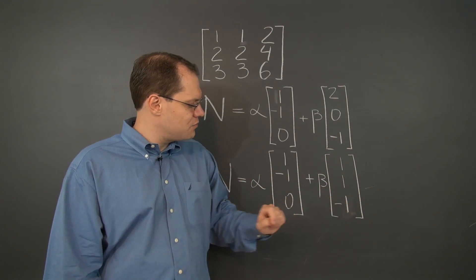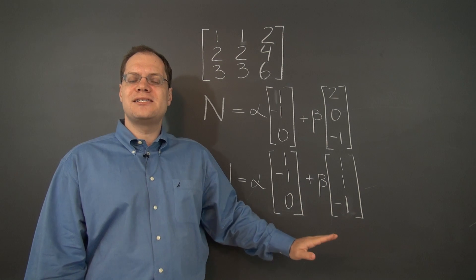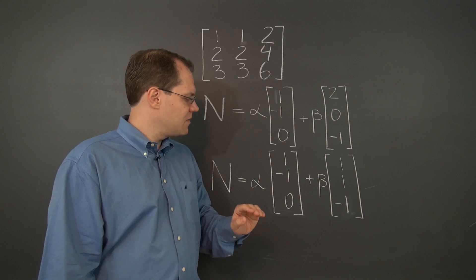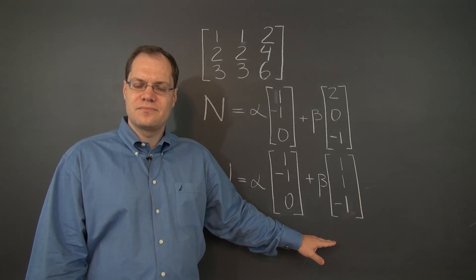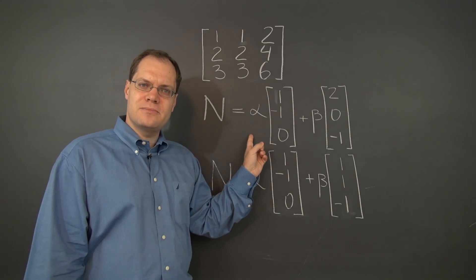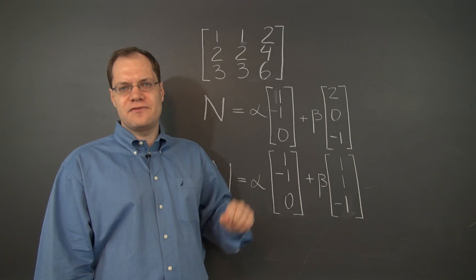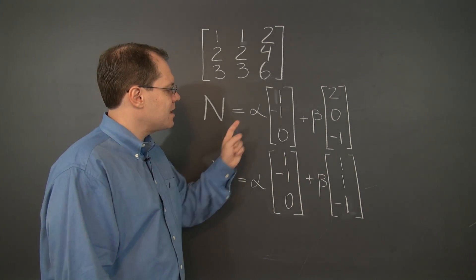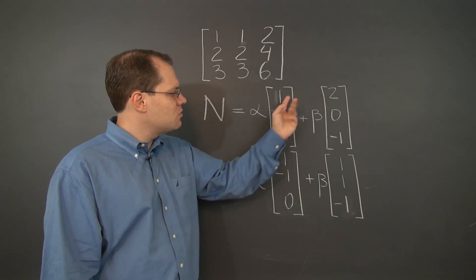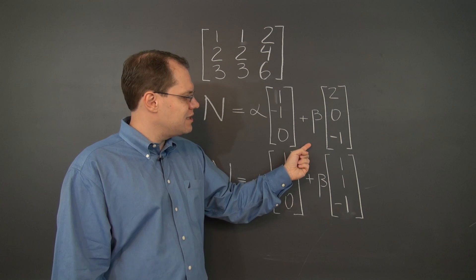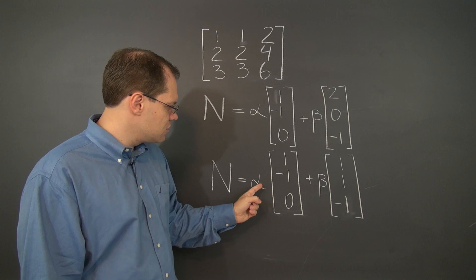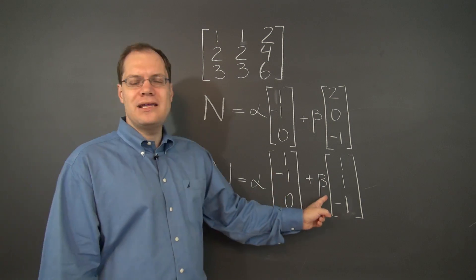Instead we could say the third column is the sum of the first two, leading to (1, 1, -1). So we've discussed at length that these expressions, while different, are actually equivalent. Equivalence means all of the vectors represented by the first expression are also represented by the second and vice versa. For example, when alpha equals one and beta equals one, this expression equals (3, -1, -1).